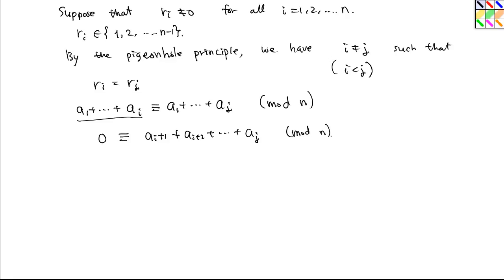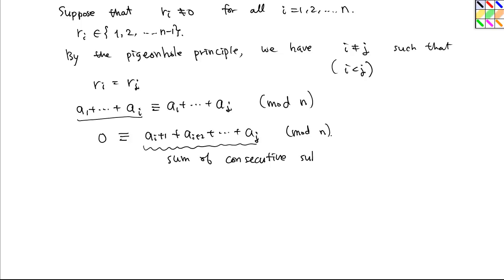This means that this is the sum of consecutive integers, a consecutive subsequence. So in this case, we also have the required property. So this is the end of the proof.